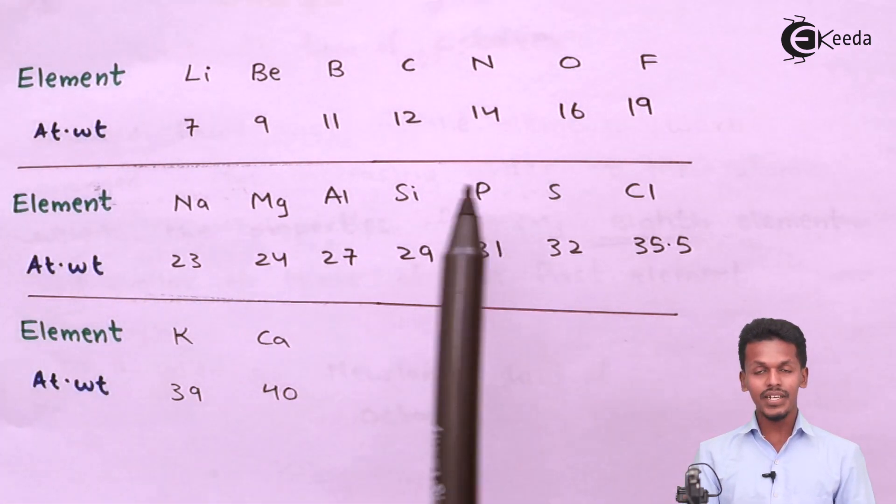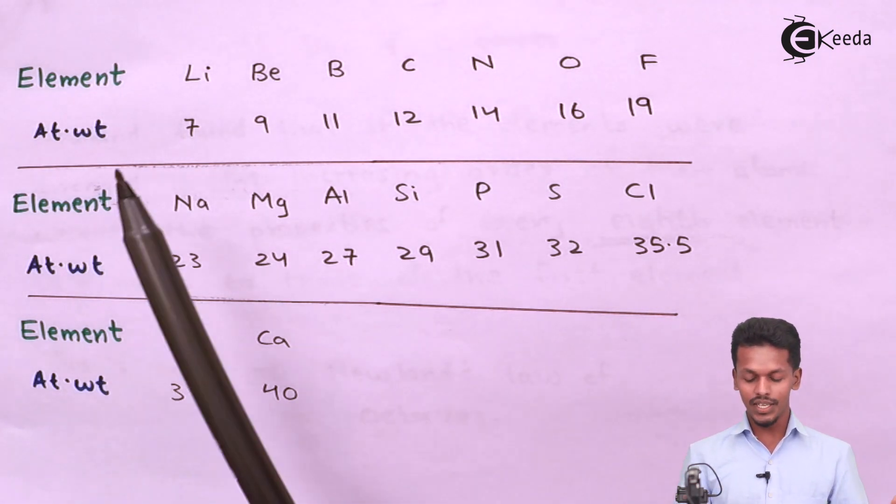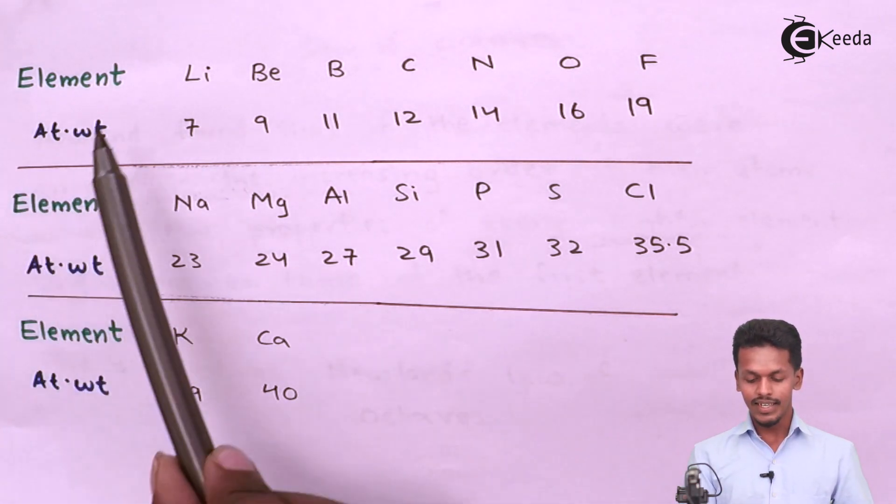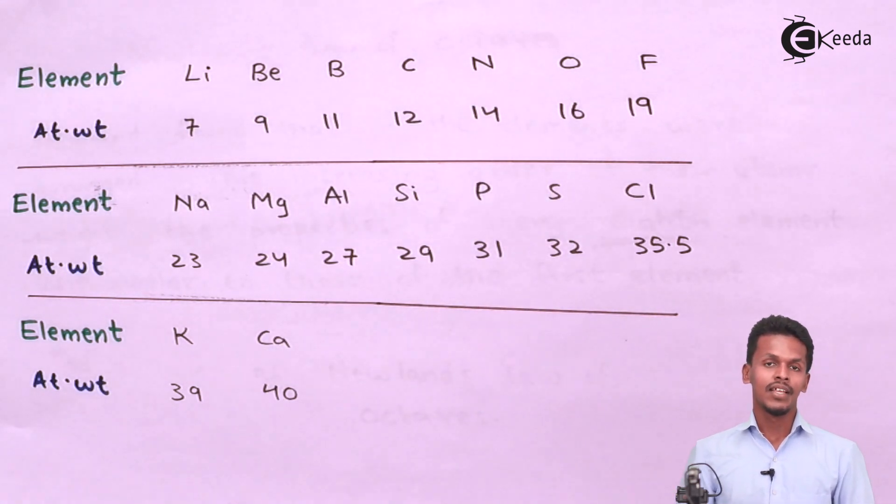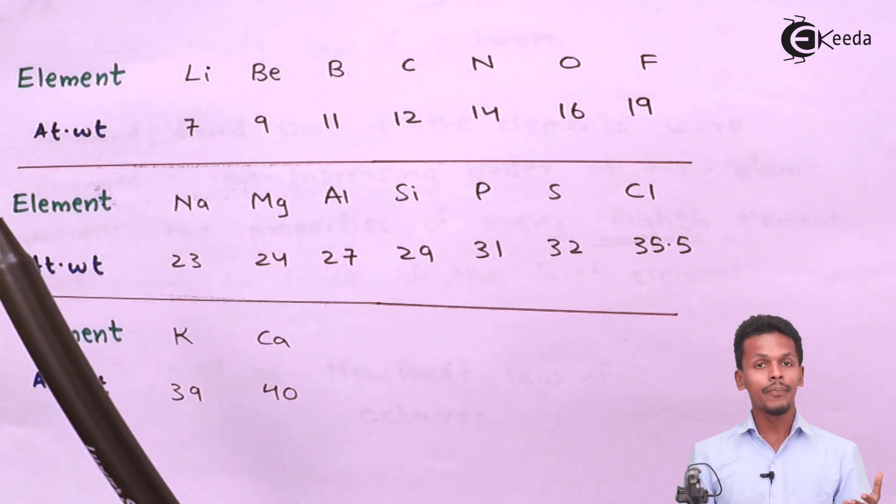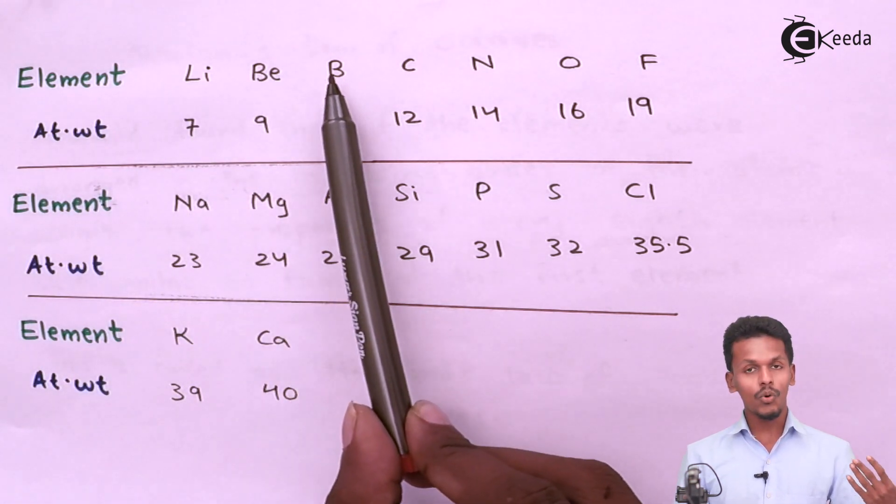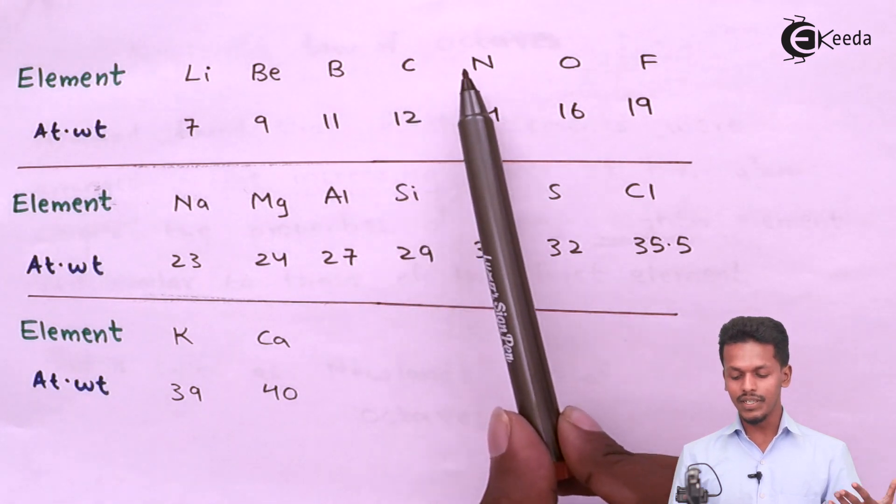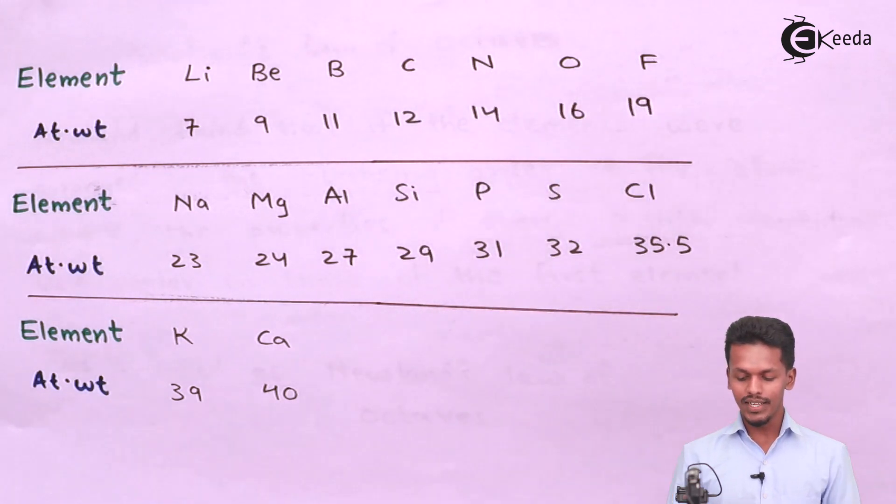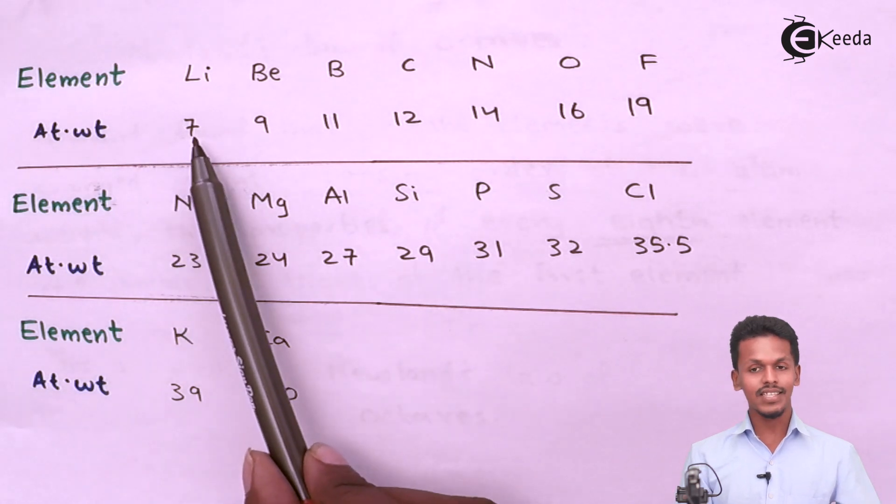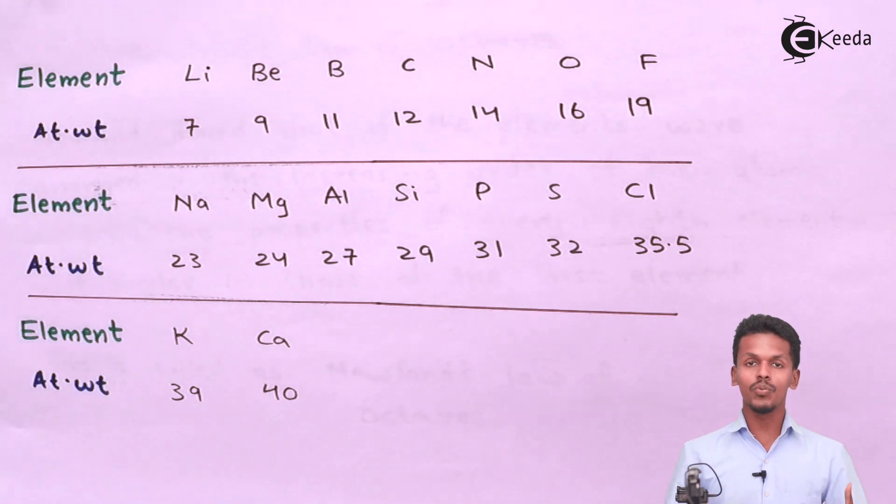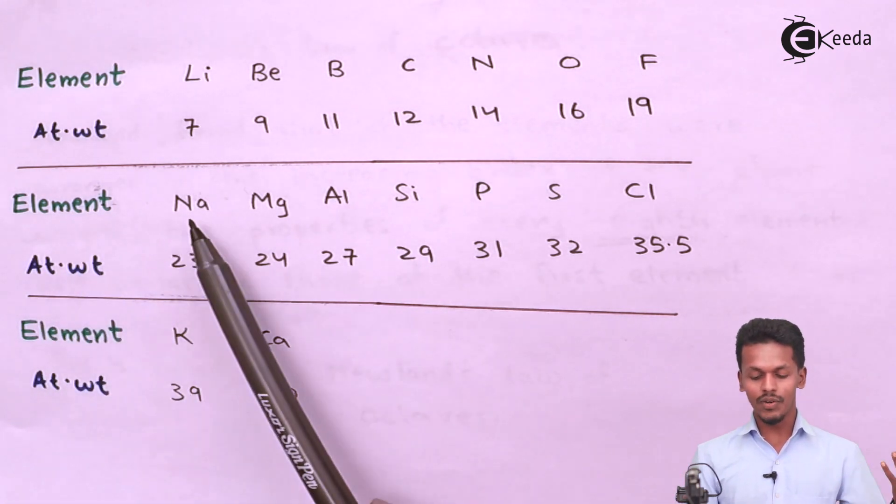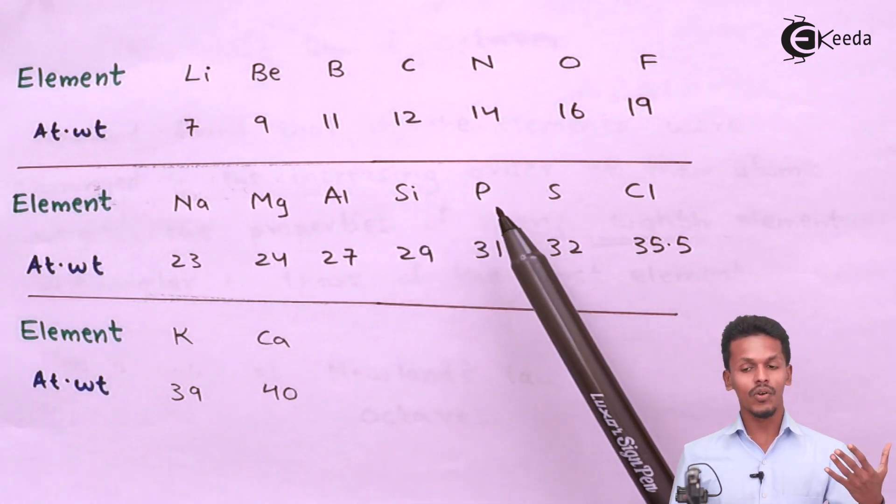These elements have been arranged horizontally starting from lithium, beryllium, boron, carbon, nitrogen, oxygen, and fluorine. They have particular atomic weights: 7, 9, 11, 12, 14, 16, 19. The next group of elements starts from sodium, magnesium, aluminum, silicon, phosphorus, sulfur, and chlorine.